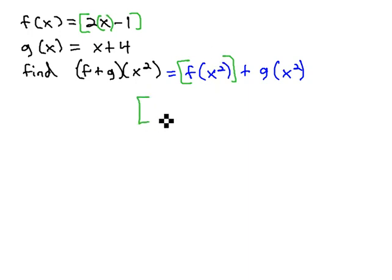So that f(x) part is 2, x is replaced with x² minus 1, and then we add to it this g(x²).